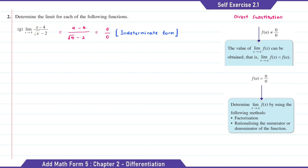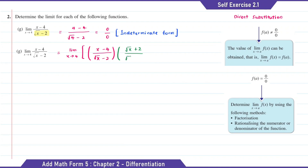The answer is 0 over 0. To find the limit value for G, here we need to rationalize the denominator.